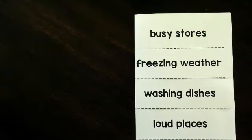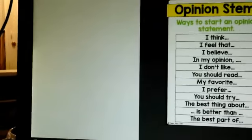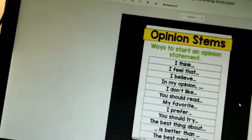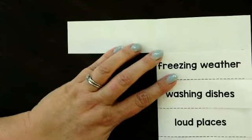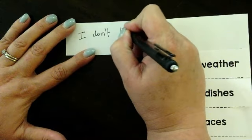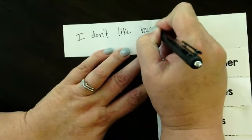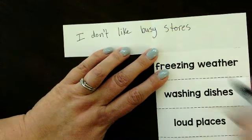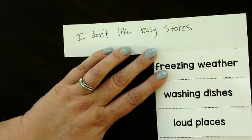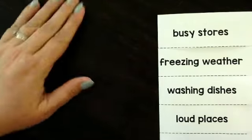I am not a big fan of busy stores, which means I do not like it. Looking at my opinion stems, there is one on the screen that says 'I don't like.' So 'I don't like busy stores' is a fine opinion statement. On my paper, I'll open this up, use my sentence stem, and write: 'I don't' — don't forget your apostrophe — 'like busy stores.' Period. That is my opinion statement.